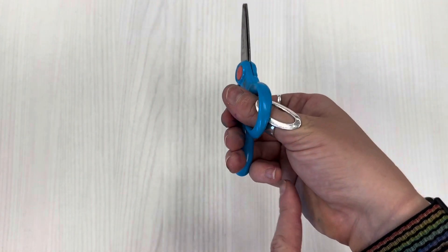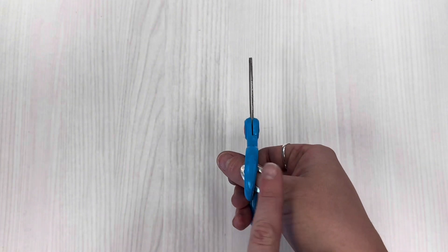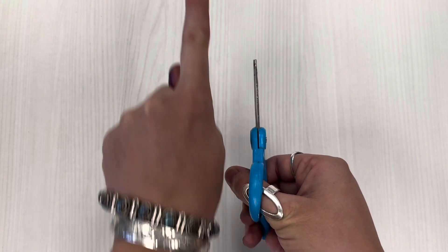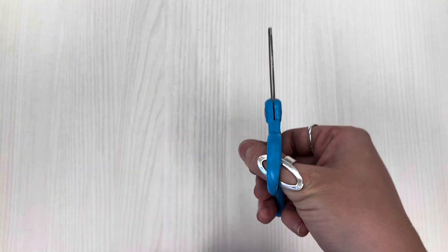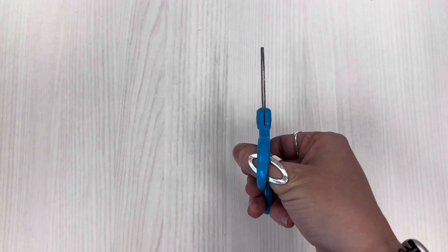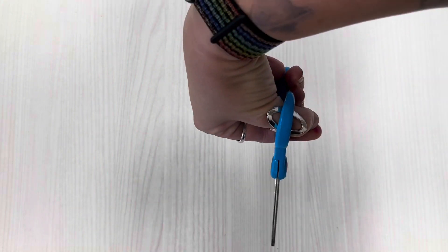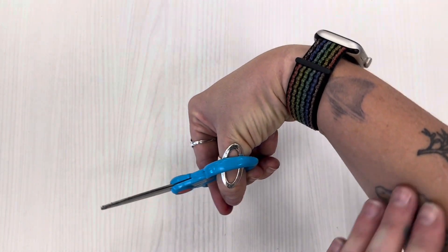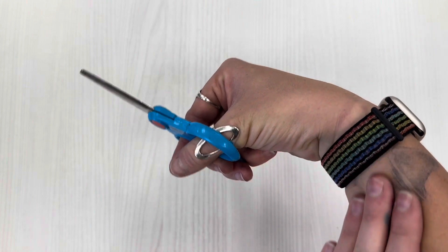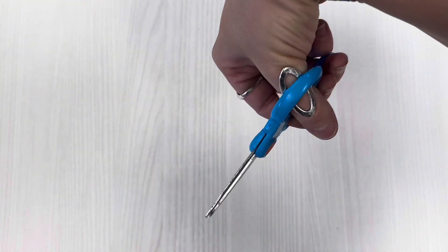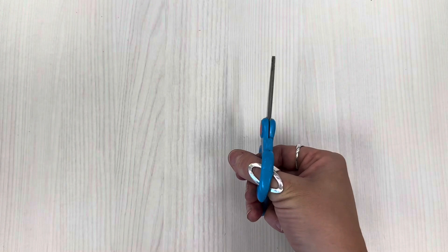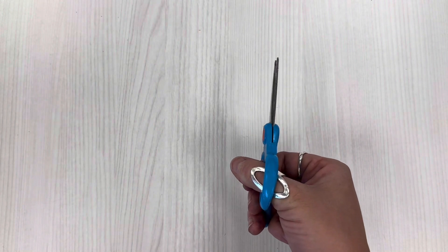Now when you are cutting you want your blade to point away from you. So you're gonna hold it like this. You don't want your blade to be pointing this way or definitely not that way because it's very hard on your wrist to cut in like this. So you want to have your scissors pointing away from you.